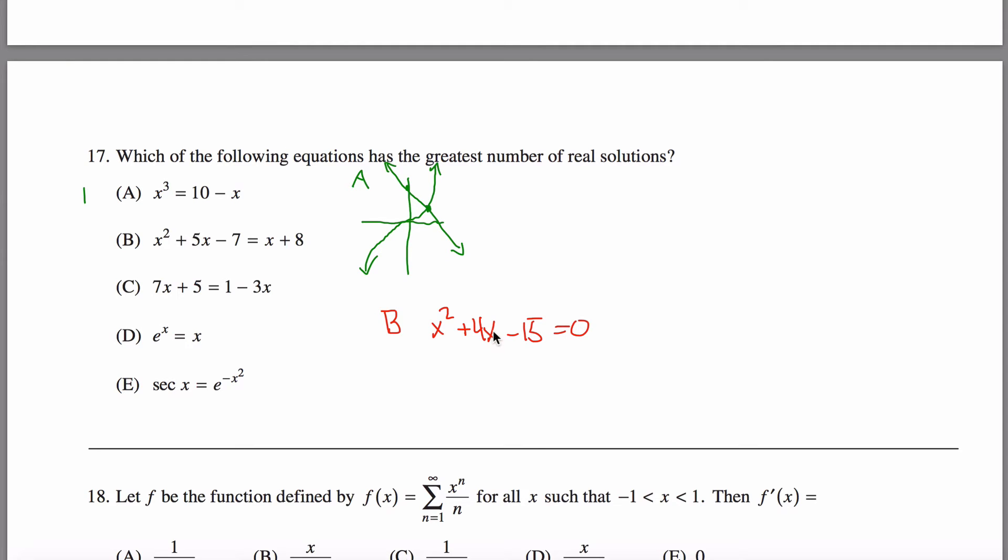And then to figure out the number of solutions that you have here, you could use the discriminant. So b² - 4ac. So b² is 16 minus 4 times a times c. I think it's 76, but it doesn't matter. It's a positive number. So I have two solutions.